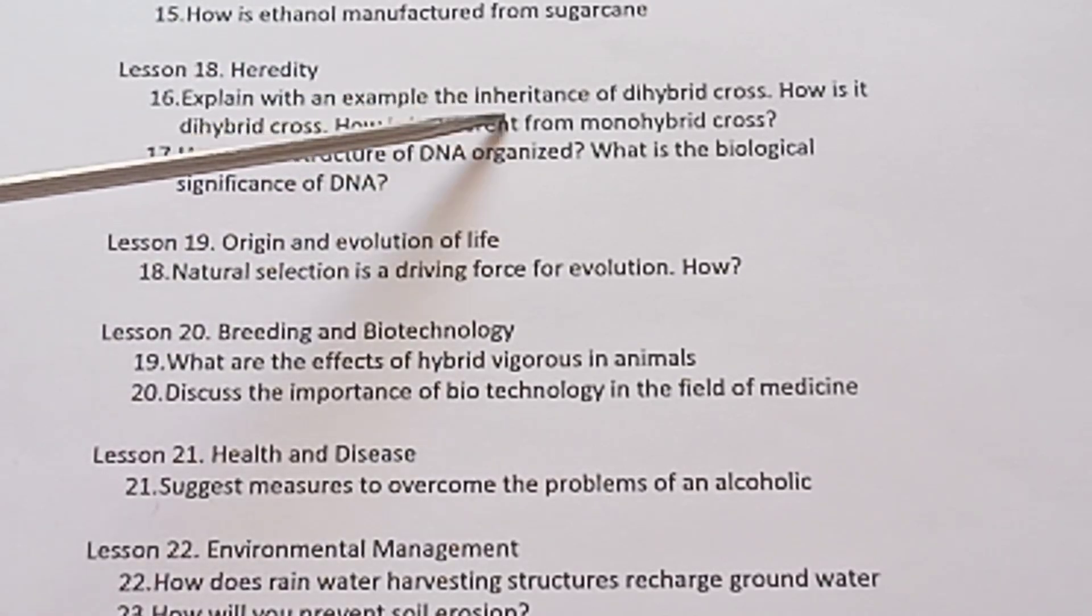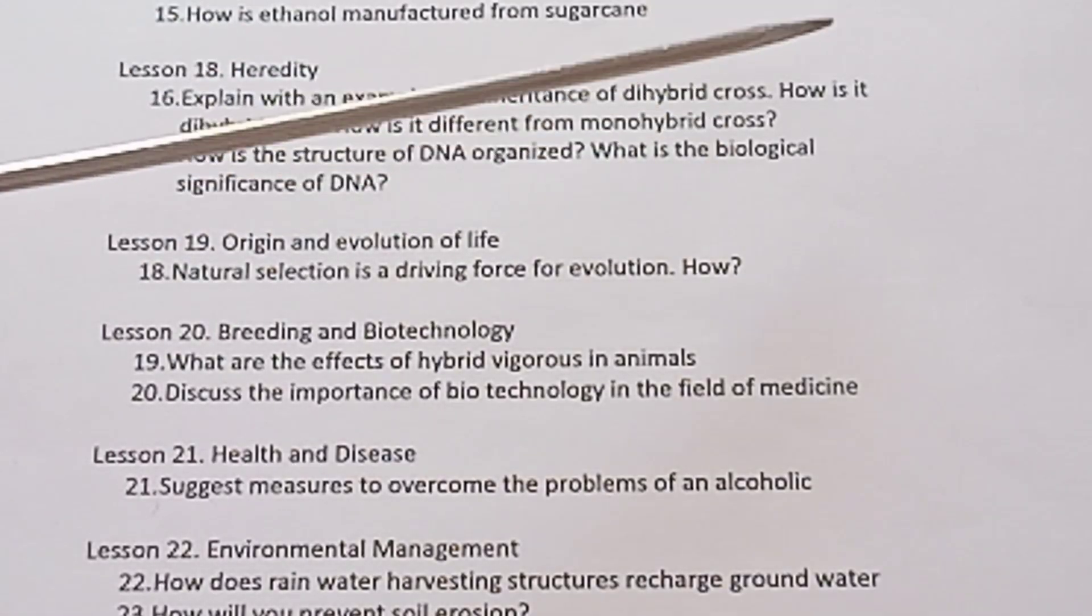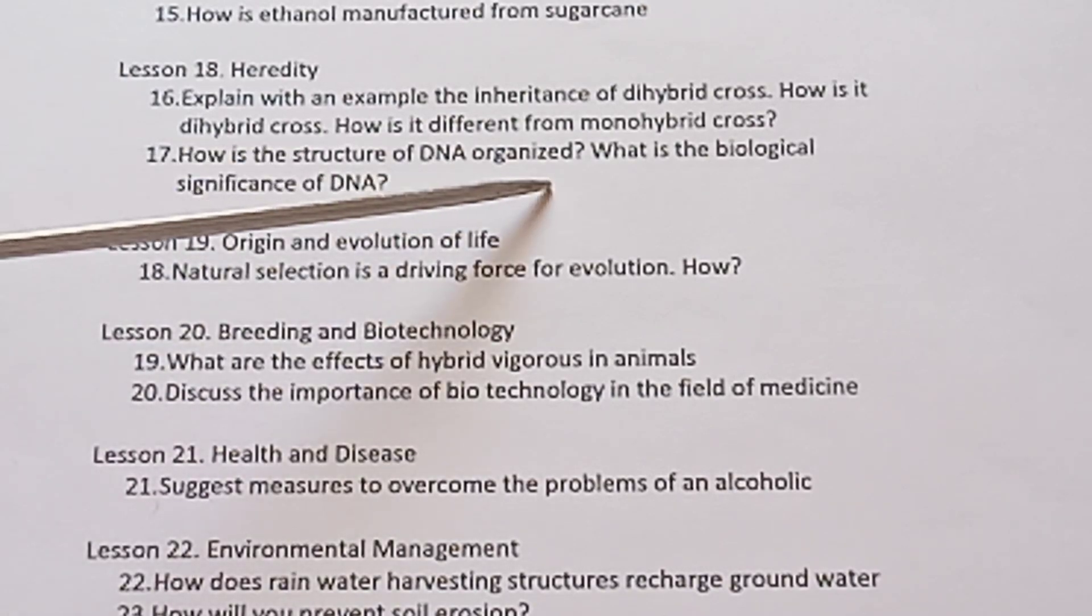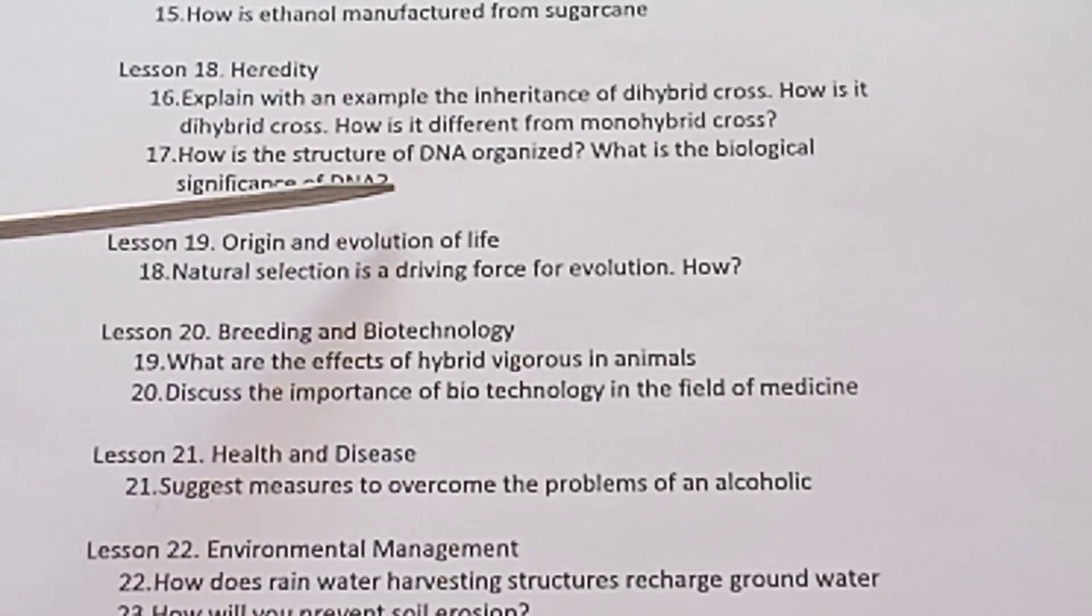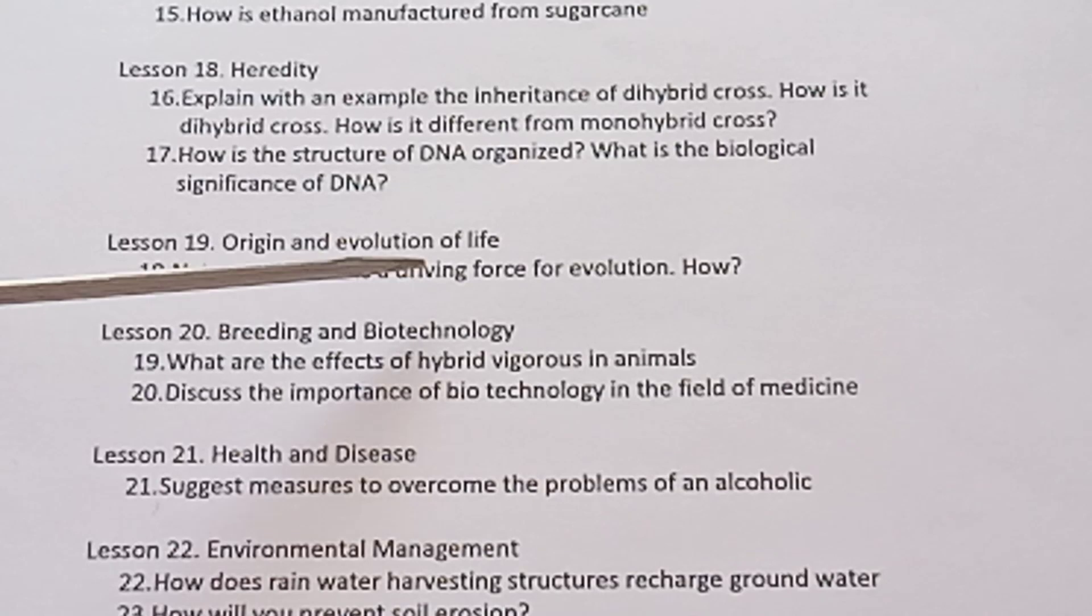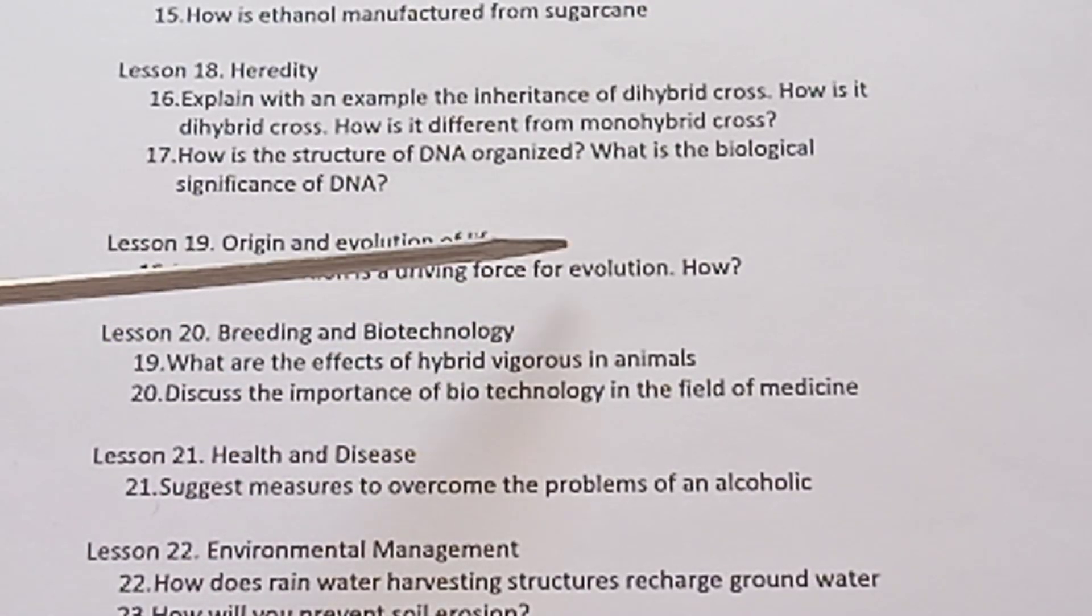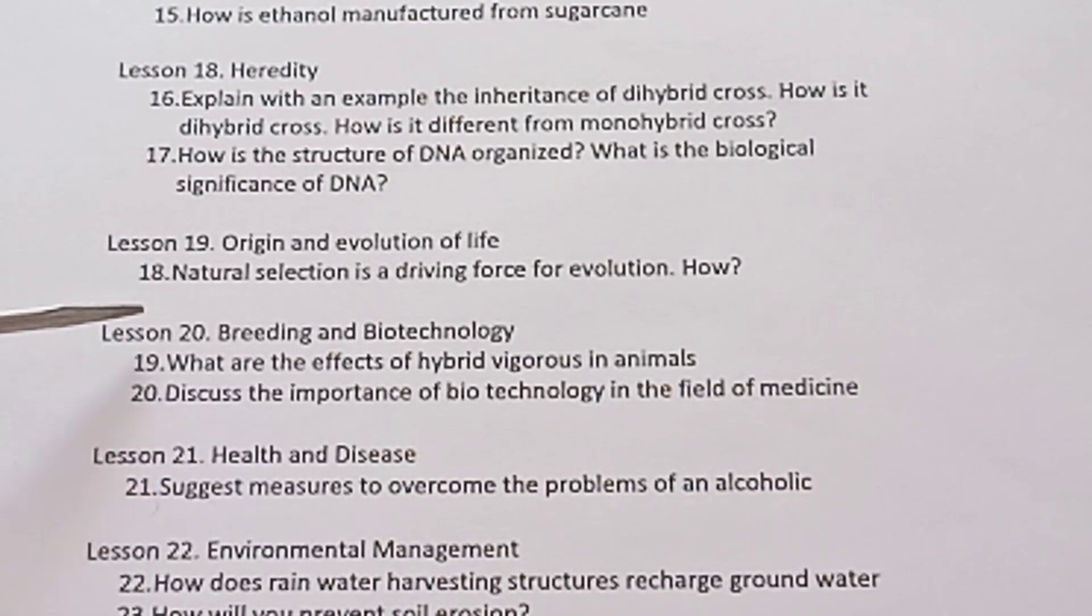Lesson 18 Heredity. Explain with an example the inheritance of dihybrid cross. How is it? Dihybrid cross is different from monohybrid cross. How is the structure of DNA organized? What is the biological significance of DNA? You have to draw the DNA structure and you have to explain. Lesson 19 Origin and Evolution of Life. Natural selection is a driving force for evolution. How?